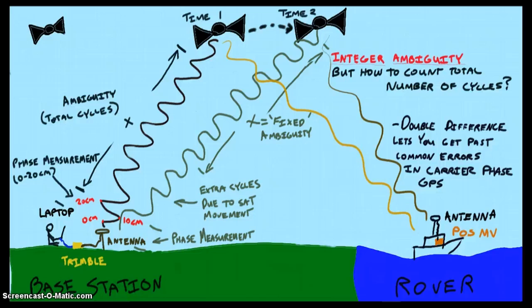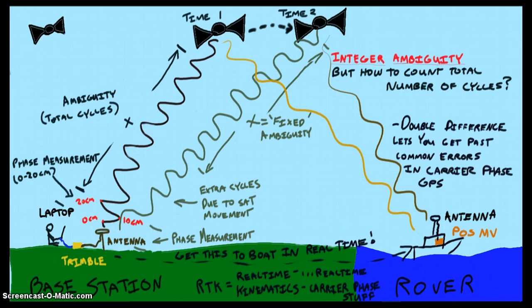So I still haven't mentioned RTK, or real-time kinematics. Kinematic is basically just carrier phase GPS in fancy tech language. If you do these carrier phase measurements and get those corrections to the rover in real time, you got RTK. It is that simple.